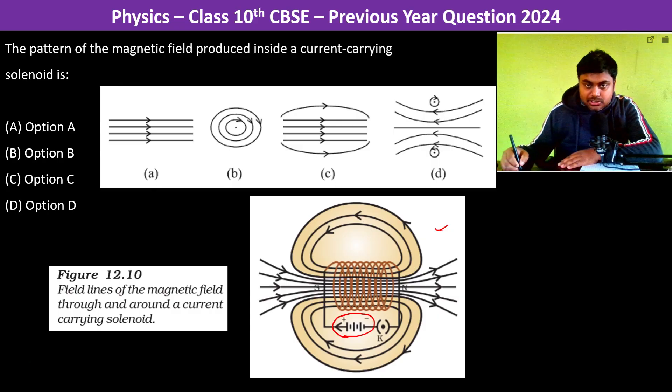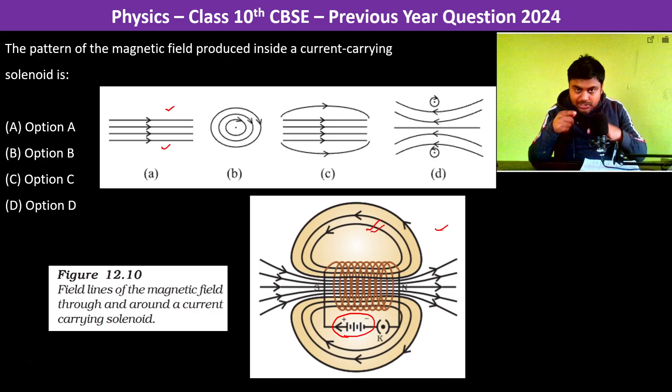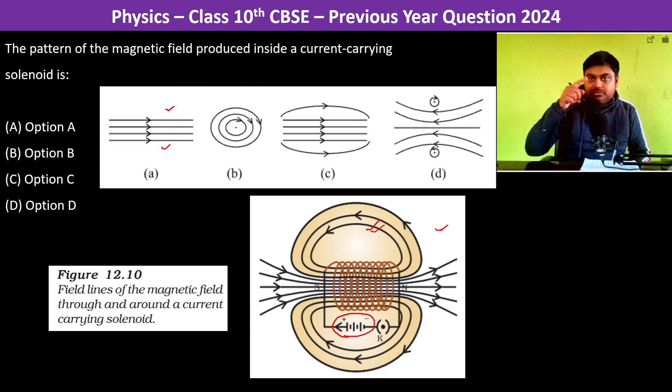If you see here what is happening - here it is parallel, that is correct, but outside also you see this is the outside part of the solenoid and outside also the magnetic field lines are there which form a loop.